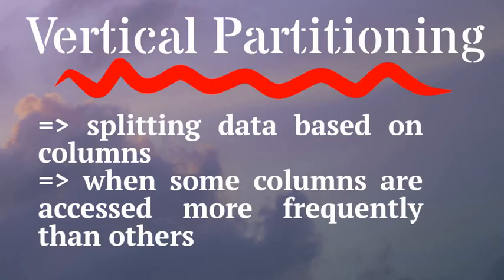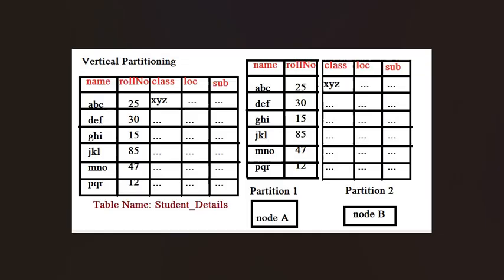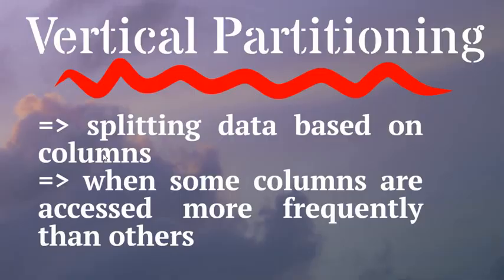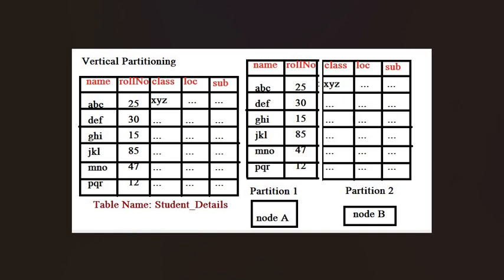Now let's talk about vertical partitioning. While horizontal partitioning is based on rows, vertical partitioning splits data based on columns. Different nodes in a distributed system hold different sets of columns for each row. This approach is used when some columns are accessed more frequently than others, reducing the amount of data that needs to be read for specific queries. For example, with a student table, name and role number can be stored in partition one, while class, location, and subject are stored in partition two on a different node.